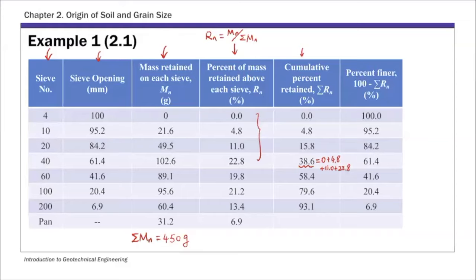The last column is 100 minus the cumulative sum of rn, which gives the percent finer or percent passing. That's the final column. We're then going to plot the particle size distribution curve using these data.